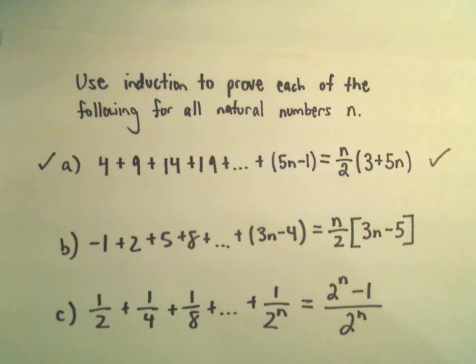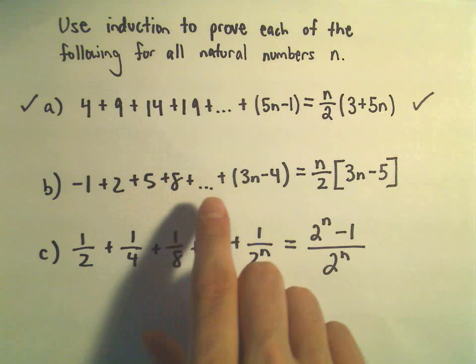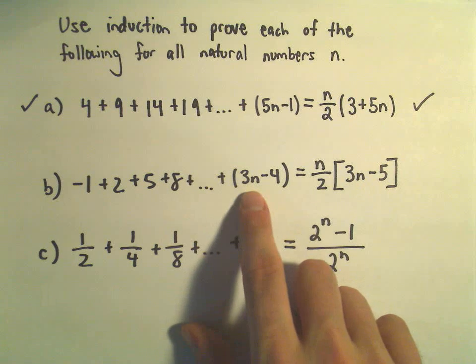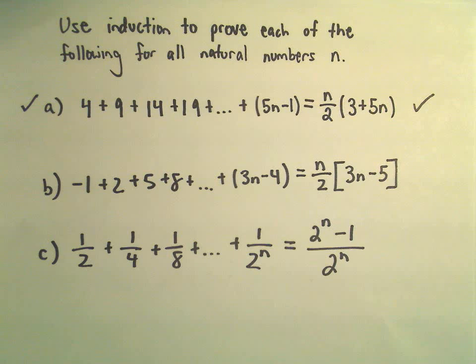Alright, in this video we're going to do another example of induction. We'll prove that negative 1 plus 2 plus 5 plus 8 plus dot dot dot plus the quantity 3n minus 4, that's equal to n over 2 times the quantity 3n minus 5.